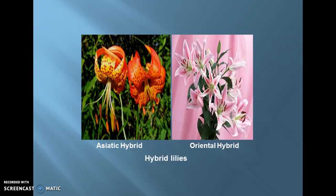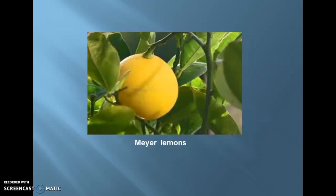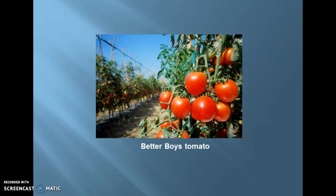Next one is Meyer lemons. Meyer lemon is the cross between a true lemon tree and mandarin orange. The fruit of Meyer lemon is much sweeter in taste compared to normal lemons. Next one is the Better Boy tomato. It is quite resistant to fusarium wilt and nematodes, which are common tomato problems that cause huge losses to tomato cultivars.